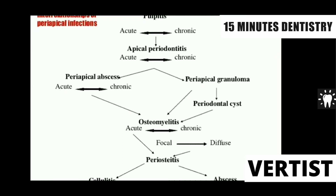The most severe pain in the body is seen in myocardial infarction or heart attack. The second most severe pain is seen in the terminal stage of malignancy — that is cancer — especially when it involves the nerves. In that sequence, the third most severe pain is always acute pulpitis, in which the patient has severe pain.